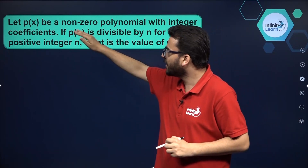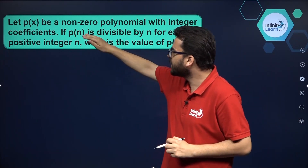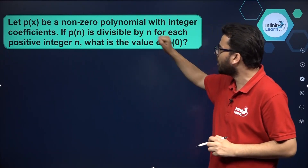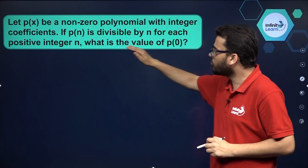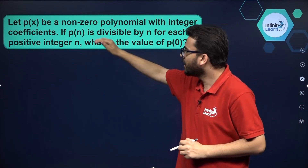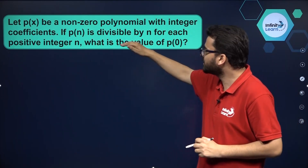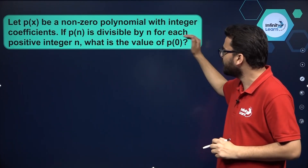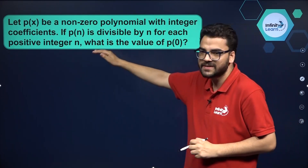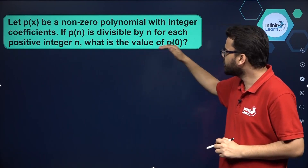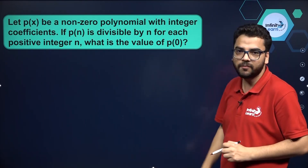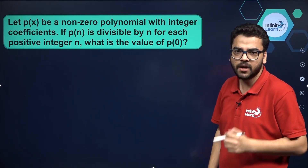It is given that let P of x be a non-zero polynomial with integral coefficients. If P of n is divisible by n for each positive integer n, we have to find the value of P of 0.